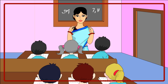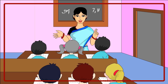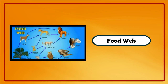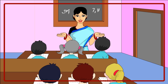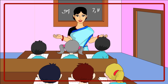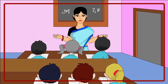Many food chains are interlinked to form a food web. For example, plants can be eaten by rabbits, rats, birds, grasshoppers or insects. Rats can be eaten by hawk or snake. Snakes can be eaten by hawks and so on. Thus, a balance in nature is maintained between different animals and plants through food chains and food webs.